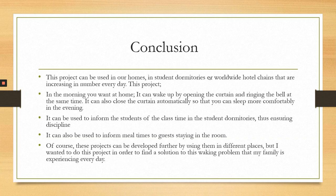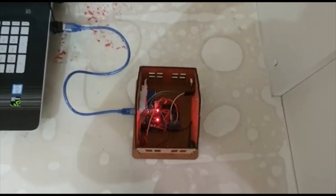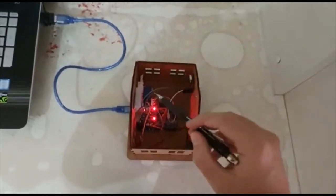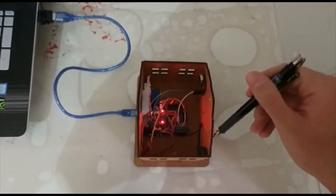It can be used to inform students of class time in dormitories, ensuring discipline. It can also be used to inform guests in hotel rooms of mealtimes. This project can be developed further for different places. I wanted to do this project to find a solution to the waking problem my family experiences every day. The system is the same as electrical curtain systems — I just upgraded them with Arduino Uno, real-time clock, and a buzzer.